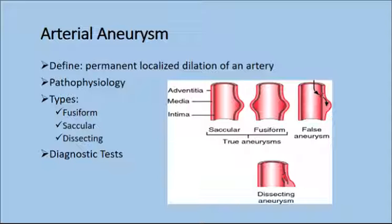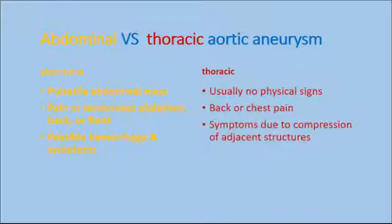It's not always treated surgically. They monitor aneurysm growth, looking for symptoms, and maintaining the blood pressure as low as possible to prevent dissection. Abdominal versus thoracic aortic aneurysm — just laid out so you can compare the two.